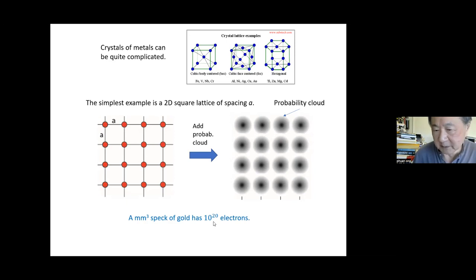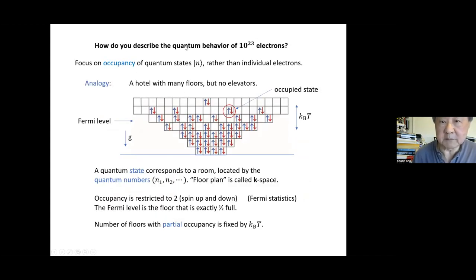As Chi Miao already mentioned, there are a lot of electrons, even in the smallest speck of metal. Gold, a millimeter cube size sample, will have 10 to the 20 electrons. This is a number beyond human comprehension, but that's our task. So the challenge is: how do you describe the quantum behavior of 10 to the 23 electrons?